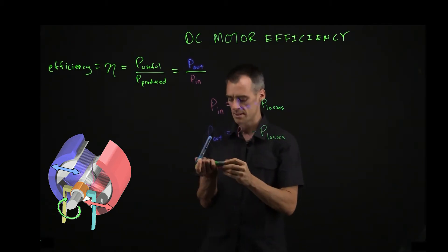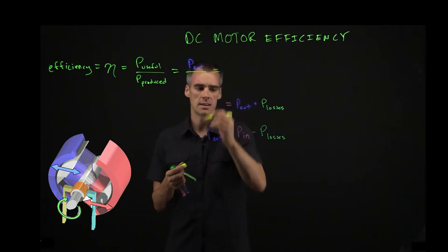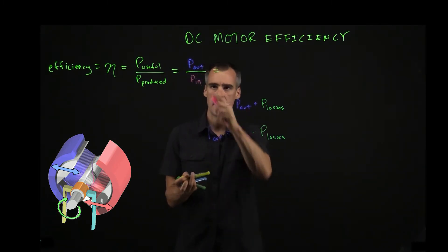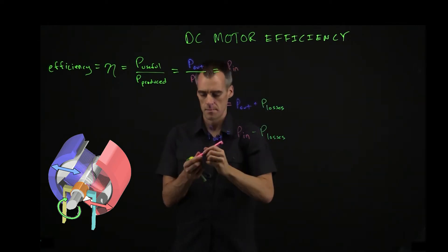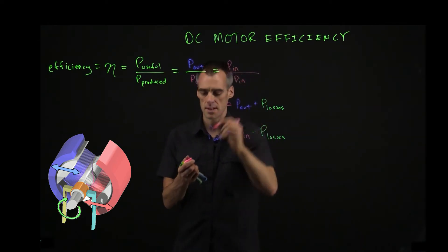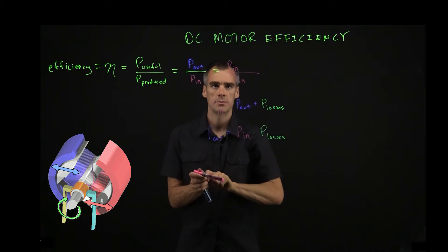So another way that we could rephrase this ratio is, instead of P out, we could plug this in. So it's equal to P in over P in, but on the top we're going to have to subtract the losses.